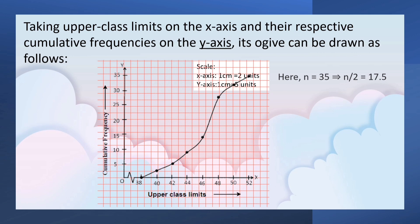Here, n is equal to 35, the total number of students. So n by 2 is 17.5. Now what will you do? Along 17.5.